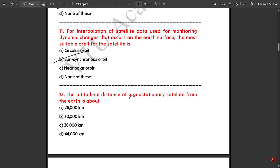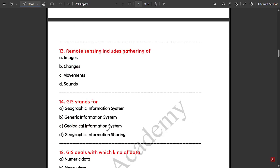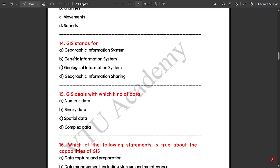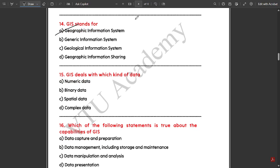The altitudinal distance of geostationary satellite from the earth is about 36,000 kilometers. Remote sensing includes the gathering of images. GIS stands for Geographic Information System. So this is the full form of GIS, which is very important.